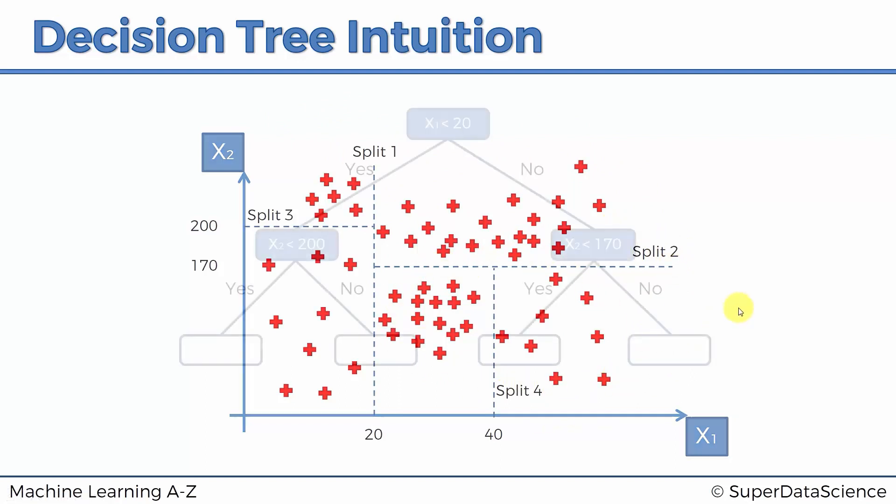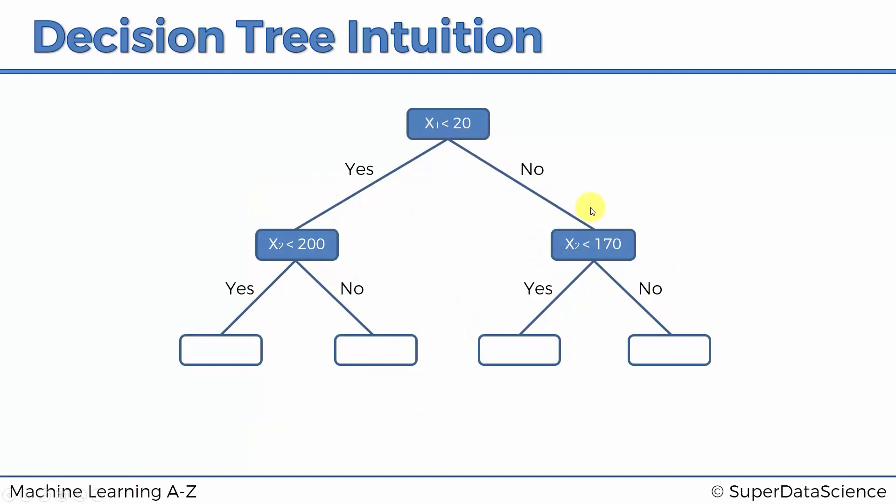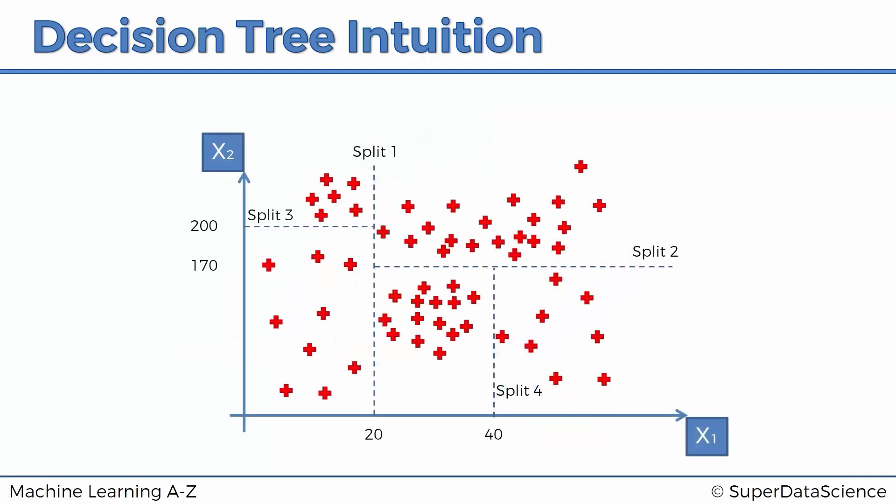Split four only happens for the points that answered to split one they answered no, it's not less than 20, and to split two they answered yes, it's actually less than 170. So no, it's not less than 20, yes, it's less than 170, and then this is where split four happens: x1 is less than 40, yes, no. Alright, so that's our decision tree. It's done, it's drawn. So what happens next?